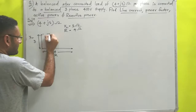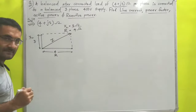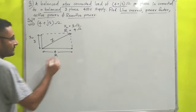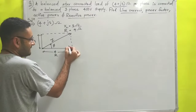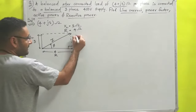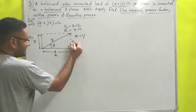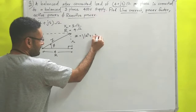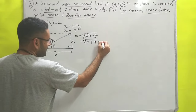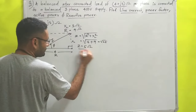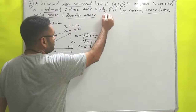The resultant of R and XL is the impedance Z. Using the Pythagorean theorem: Z = √(R² + XL²) = √(16 + 9) = √25 = 5 ohms. So the impedance is 5 ohms.